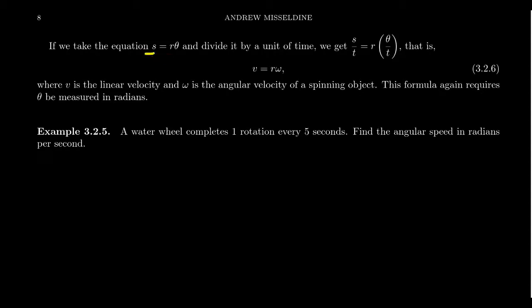Well, if you took this formula and divided everything by time, some unit of time T, well, S over T, since S is a linear distance, distance divided by time, that's a linear velocity. And so we're going to call that V for short.